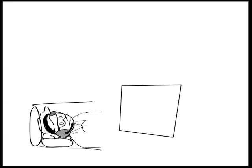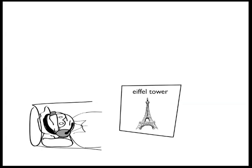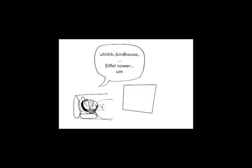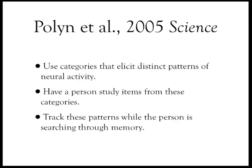So the person might study celebrity Jack Nicholson, they might study the object birdhouse, they might study the landmark Eiffel Tower. And then at the end of the list, the screen goes blank and the participant is asked to remember as many items as they can from the list in whatever order they come to mind.